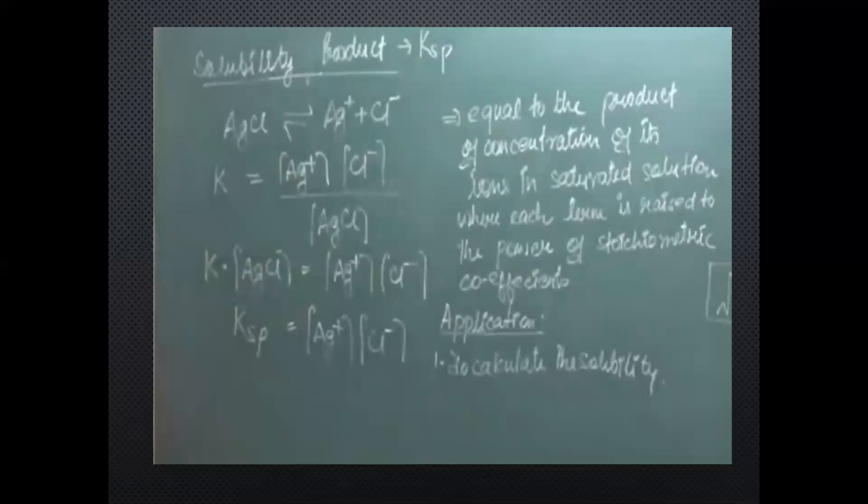The definition of solubility is the amount of solute present in 100 grams of solution in a saturated state at a given temperature. We say 'at a given temperature' because if we increase the temperature, solubility can increase. The definition of solubility product is that it is equal to the product of the concentration of its ions in the saturated solution, with each concentration term raised to the power equal to the number of ions produced on dissociation.